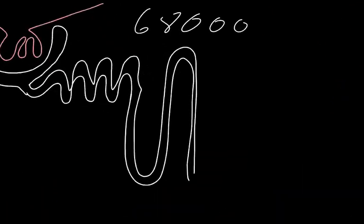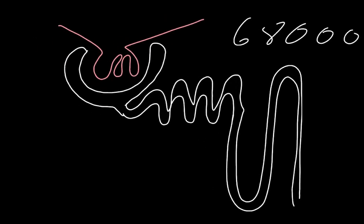So by the end of the proximal convoluted tubule, as long as you're not diabetic and suffering from bursts of high glucose level, you should have absorbed all of the glucose, all of the amino acids, and 80% of the water. The rest of the story involves the descending and ascending limbs of the loop of Henle, which generate the ion gradient used for osmoregulation, and then the hormone antidiuretic hormone, which affects the permeability of the distal convoluted tubule and the collecting duct — but that can be left for another video.